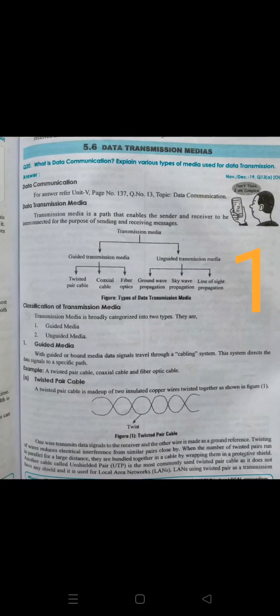In this session we will learn in detail about the guided transmission medias: twisted pair cable, coaxial cable, and fiber optics cable. In the next class we will cover unguided transmission mediums. Coming to twisted pair cable — it is made up of two copper wires which are twisted together. One wire transmits the data signal to the receiver and the other wire acts as a ground reference. Twisting the wires reduces electrical interference from similar pairs.